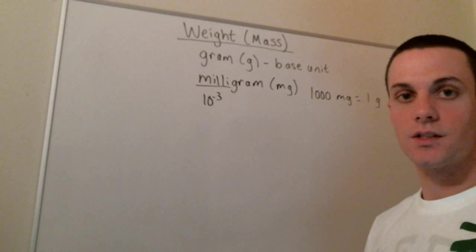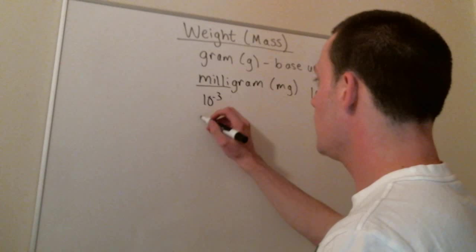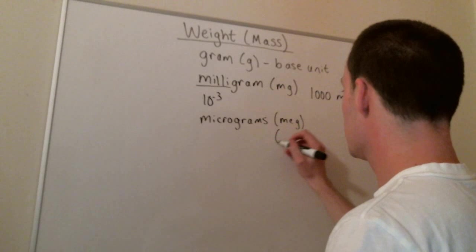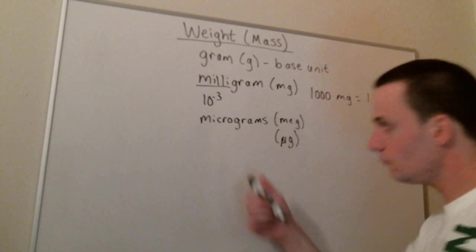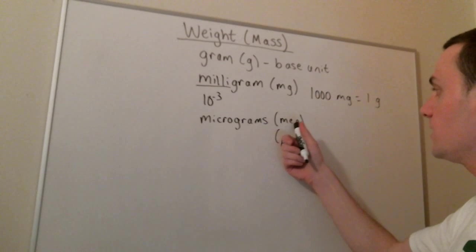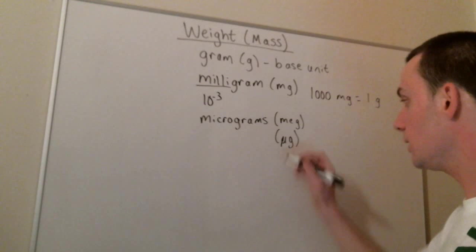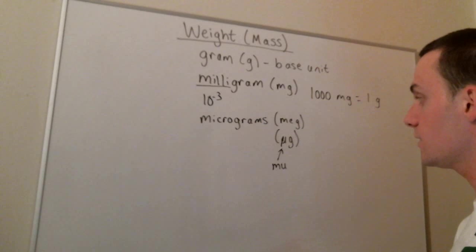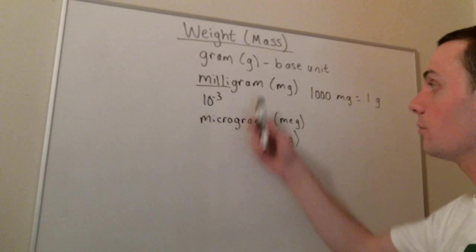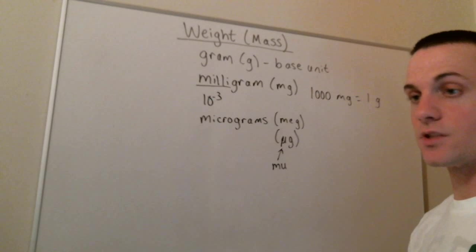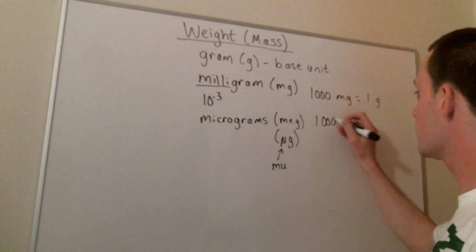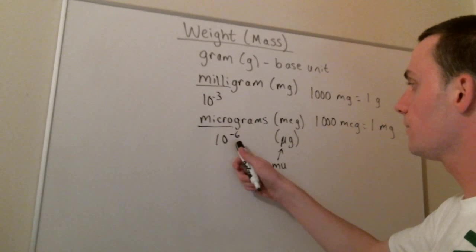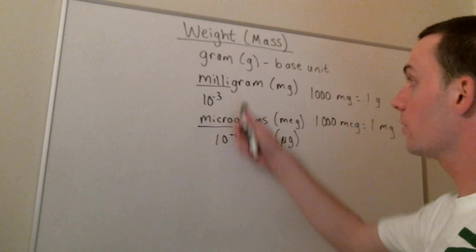Another unit of mass that we commonly use is the microgram. And we see micrograms with drugs such as calcitriol and thyroid medications. Microgram is abbreviated mcg. However, a lot of textbooks will use mu g. This is the Greek letter mu. You can see that mu looks a little bit like the regular letter m. And because of this, mcg is used to avoid getting microgram confused with milligram, and the result being a difference of a thousand fold. There's 1,000 micrograms in one milligram. Recall that micro means 10 to the negative six. So there's 1,000,000 micrograms in one gram.